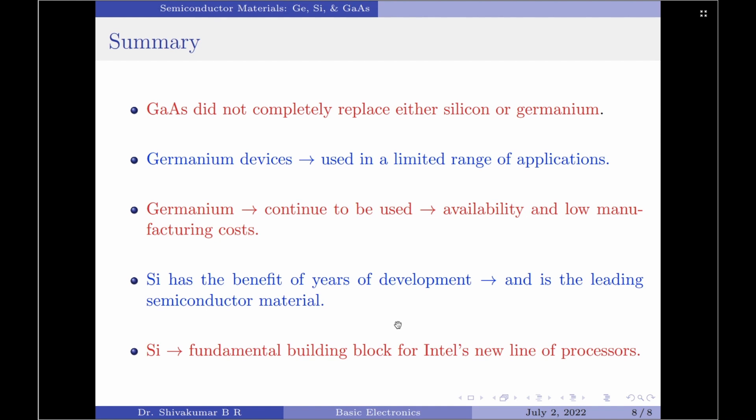Germanium devices are being manufactured even today. However, they are only used in a limited range of applications. And be sure it will continue to be used in certain applications because of its availability and low manufacturing costs, which is what is the challenge with gallium arsenide. In fact, the same can be said about silicon as well.